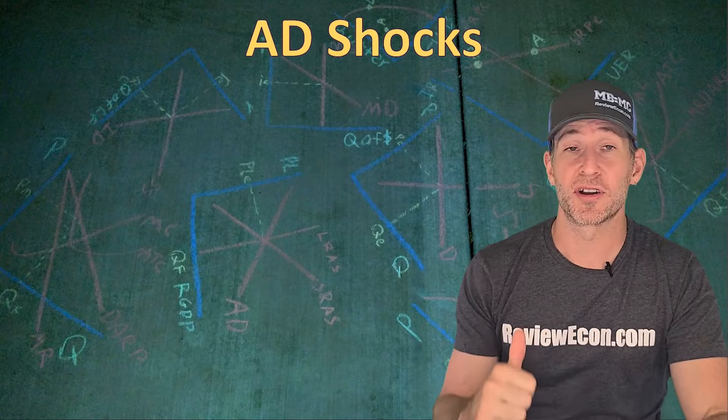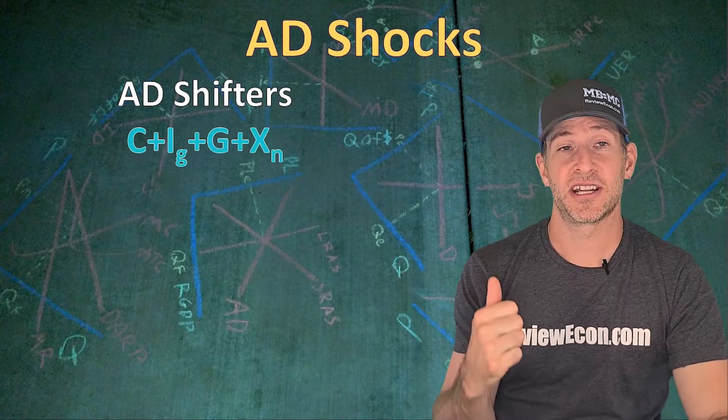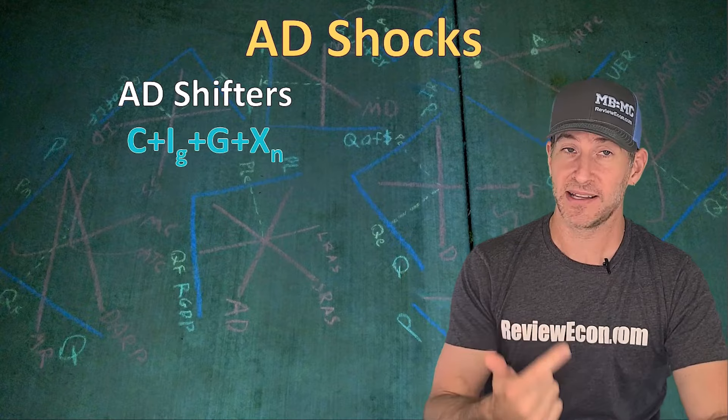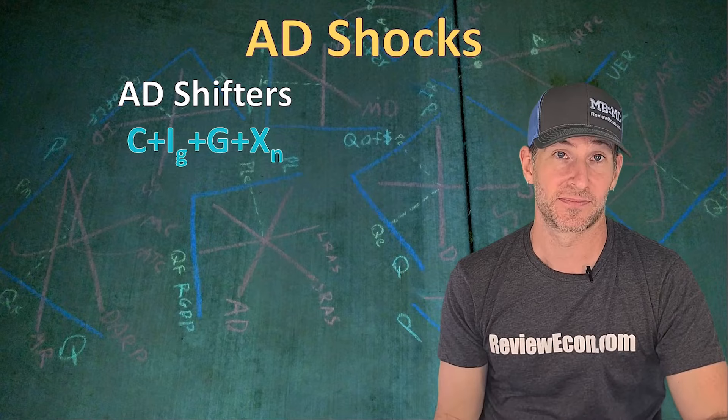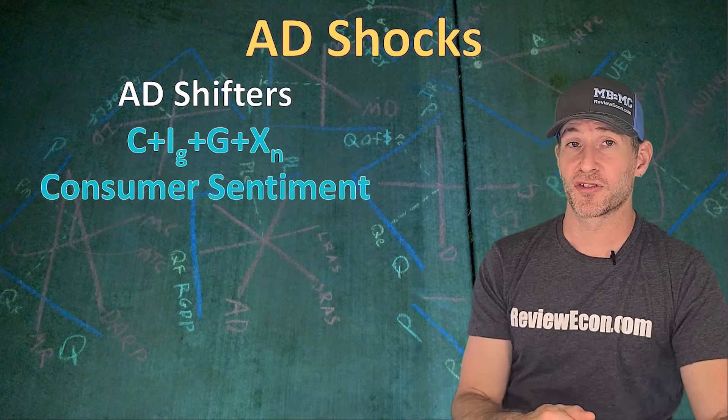Next, we are going to talk about changes within the AS-AD model, starting with aggregate demand shocks — dramatic changes in the aggregate demand curve. These are our aggregate demand shifters. First, we have our formula for GDP: C is consumer spending, IG is gross investment or business spending, G is government purchases, and XN is net exports. If any of those things increase, the aggregate demand curve will shift to the right. If any of those decrease, the aggregate demand curve shifts to the left.